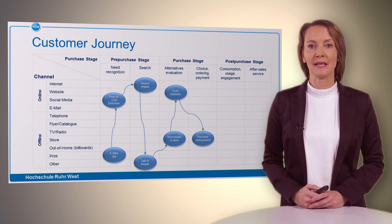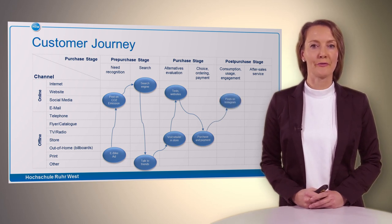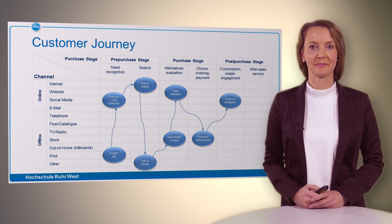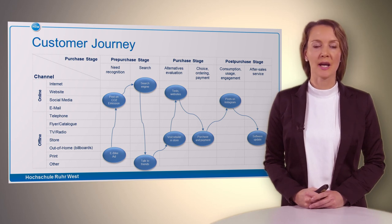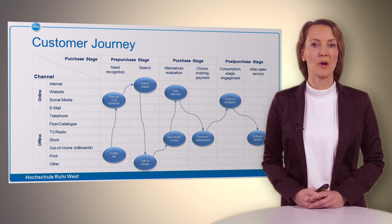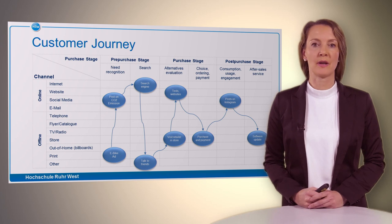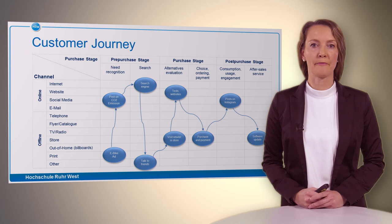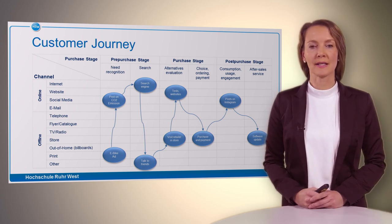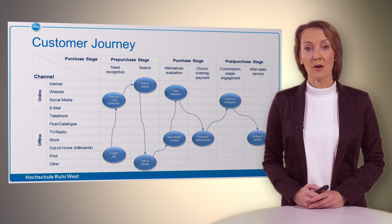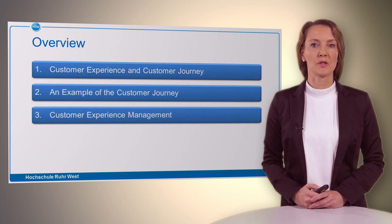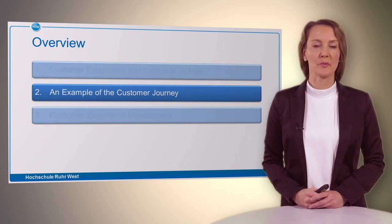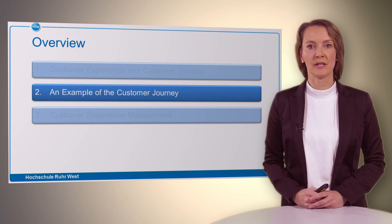After buying the e-bike, the person is really proud and presents it on Instagram, showing it to friends and getting reactions. They can also go back to the retailer if they have any problems, or for software updates needed to keep the bike running as desired. So now you have a good idea of what a customer journey looks like with the different touch points. In the second part, we want to give you that practical example in detail, showing what the person goes through and what interactions occur in order to understand how to manage the customer experience.